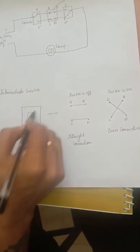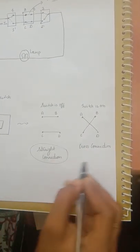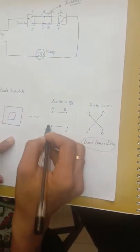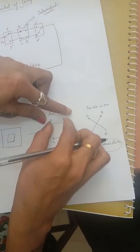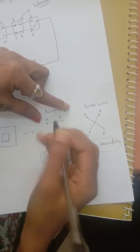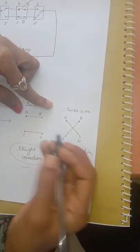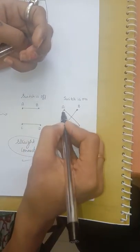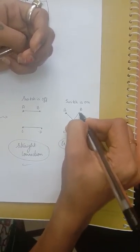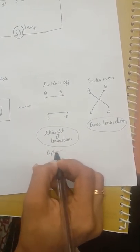The intermediate switch has four terminals: A, B, C, D. It has two combinations — a straight connection and a cross connection. Under the off condition (straight connection), terminal A is connected to terminal B and terminal C is connected to terminal D. When the intermediate switch is switched on (cross connection), the contacts get interchanged: A gets connected to D and C gets connected to B. This is how the intermediate switch operates under off and on conditions.